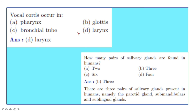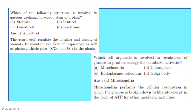Question: How many pairs of salivary glands are found in humans — 2, 3, 4, or 6? The answer is 3 pairs: the parotid gland, submandibular gland, and sublingual gland. Next question: Which structure is involved in gaseous exchange in the woody stem of a plant? The answer is lenticels, which regulate the flow of respiratory and photosynthetic gases in plants, similar to how guard cells regulate stomata.